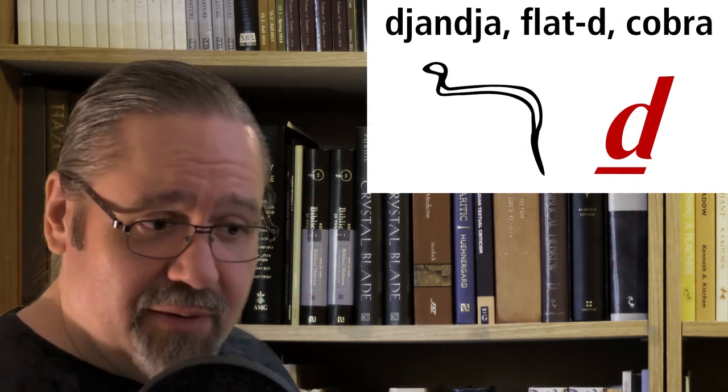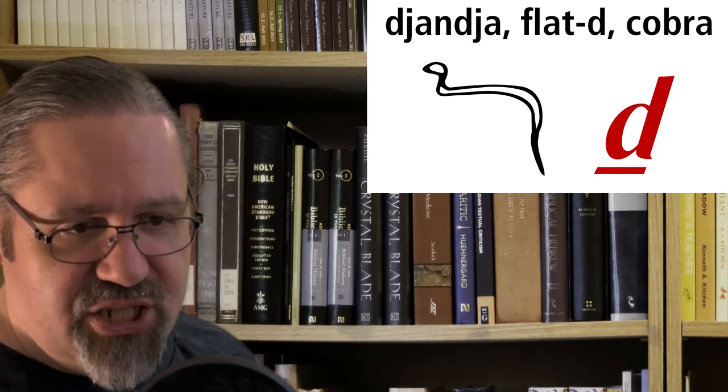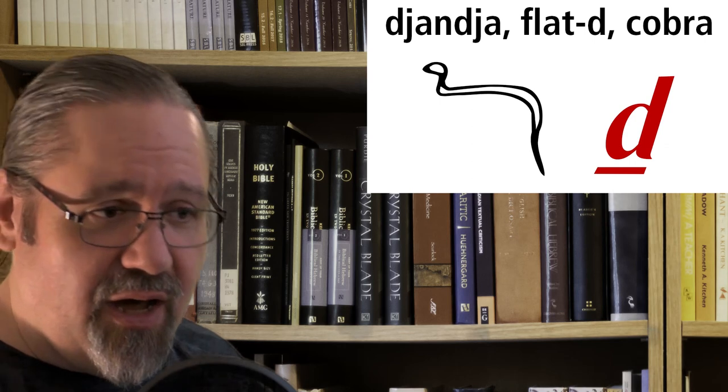D-J, but it's jh. So, the janja is the final letter of the Egyptian alphabet. Now, we have covered all 27 letters of the Egyptian alphabet. Congratulations, you made it through! Woohoo!